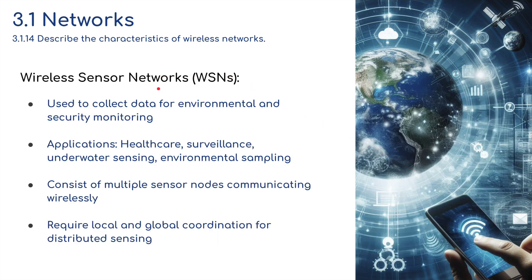Wireless Sensor Networks, or WSNs, are used to collect data for environmental and security monitoring. Applications include healthcare, surveillance, underwater sensing, and environmental sampling. A WSN consists of multiple sensor nodes communicating wirelessly and requires both local and global coordination for distributed sensing.